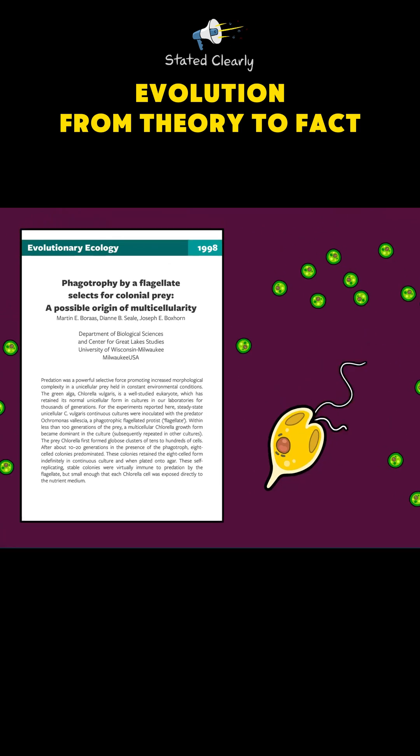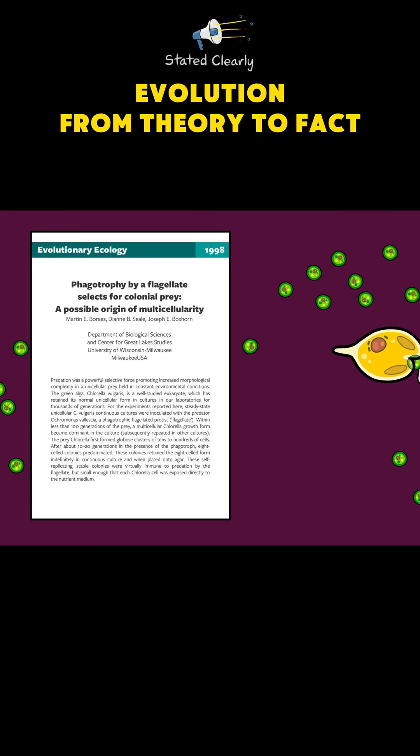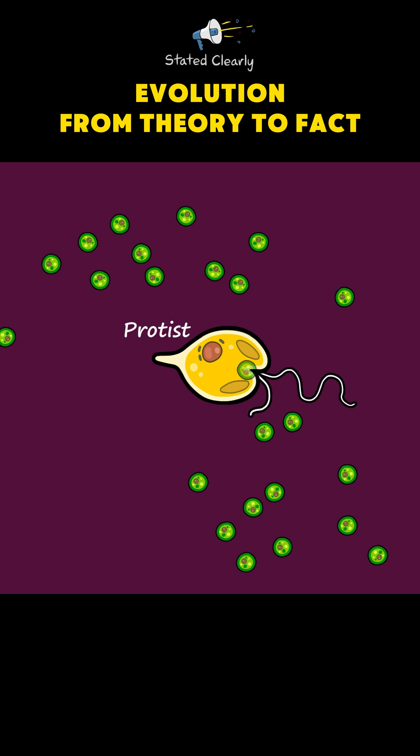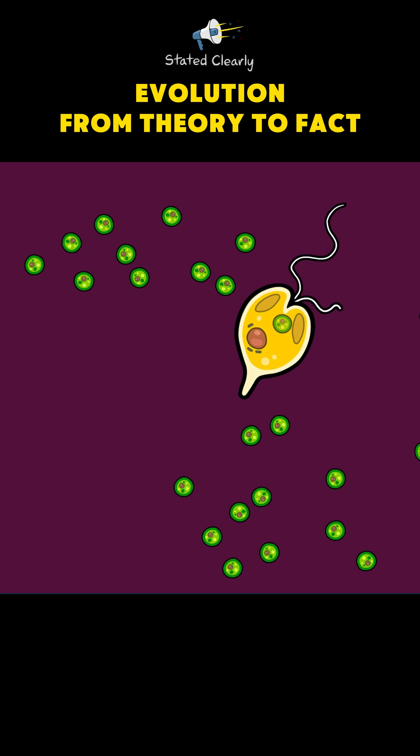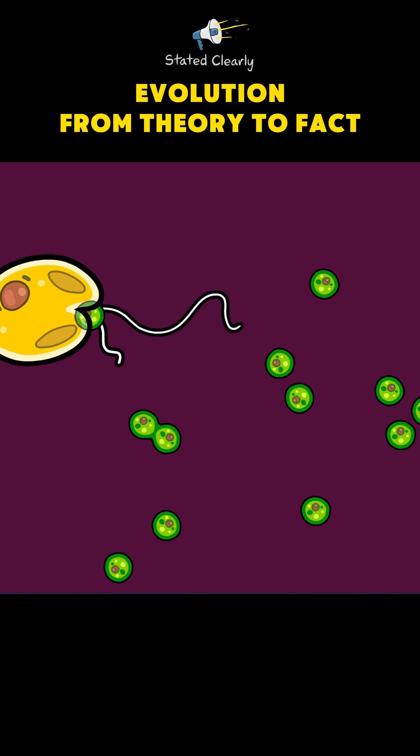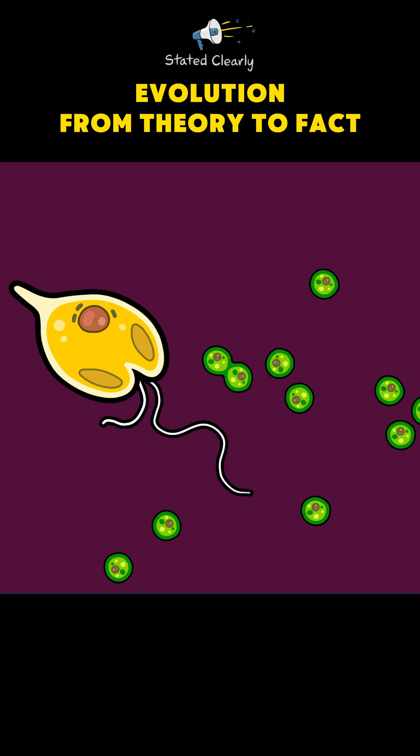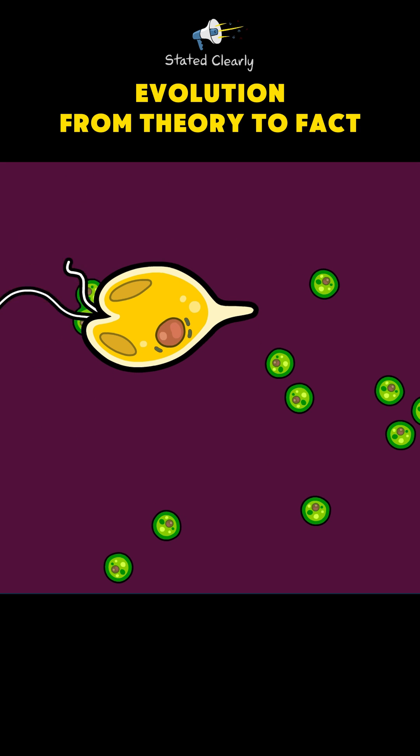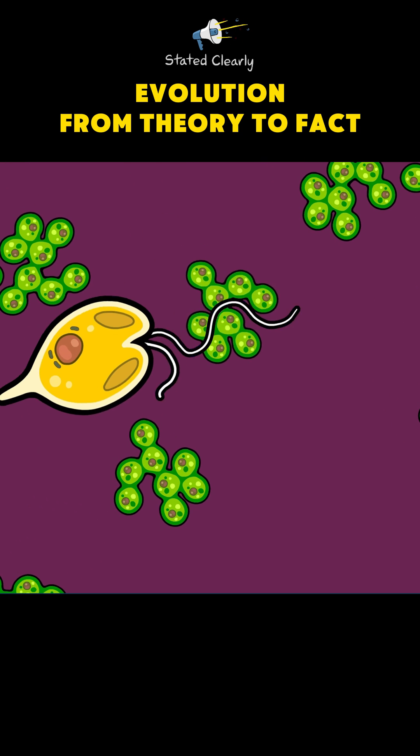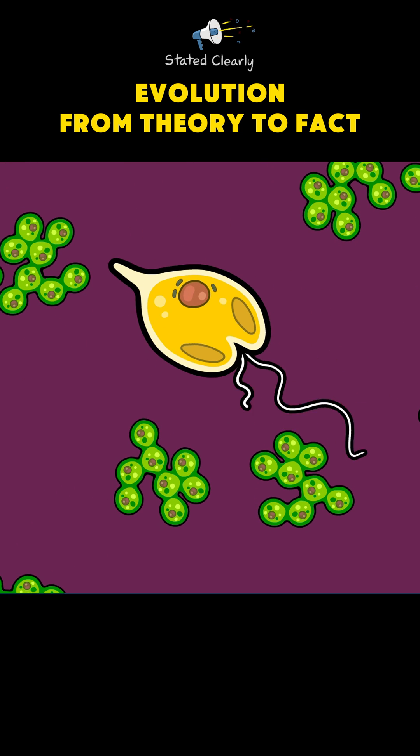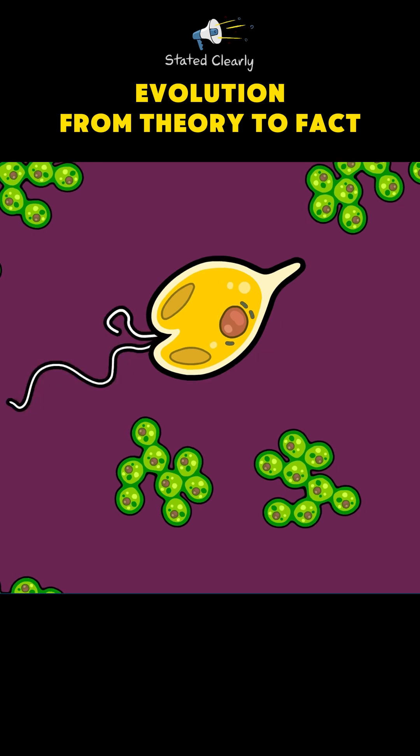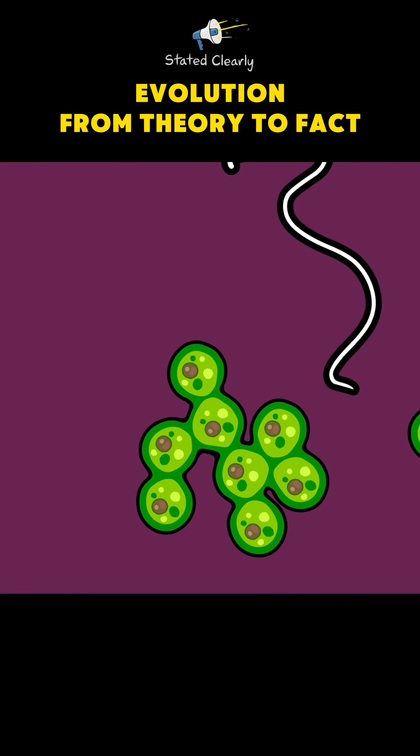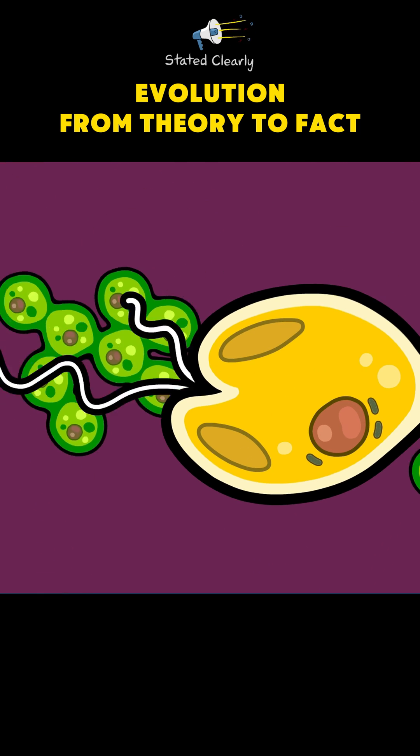In 1998, researchers set up a mini-ecosystem with protists and single-celled algae. The protists could easily swallow individual algal cells, but had trouble eating cells that happened to stick together after reproducing. In less than just 20 generations, the algae evolved multicellular cooperation. They formed groups of eight tightly connected cells that could not be eaten by the protists.